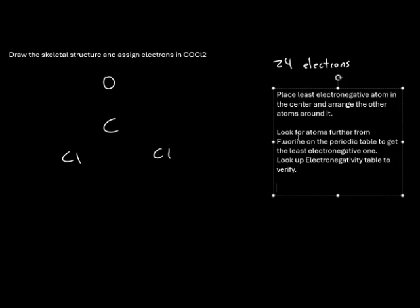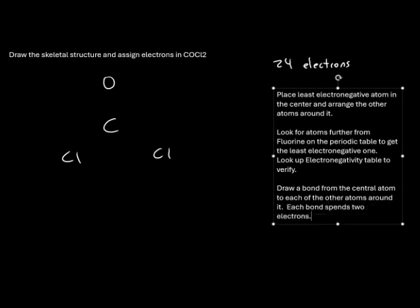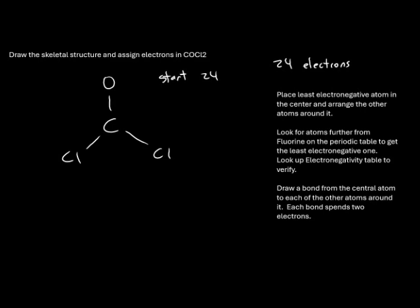Now we're going to draw a bond from the central atom to each of the other atoms outside, and each of these bonds will use two of our electrons. We'll place a bond between carbon and oxygen, a bond from carbon to chlorine, and another bond from carbon to the other chlorine. Starting from 24 electrons, we subtract three bonds times two electrons each — that's minus six — leaving us with 18 electrons remaining to place.